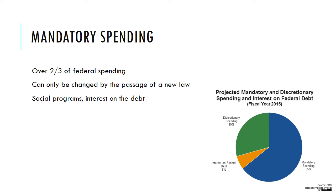Discretionary spending must be approved annually, and the biggest aspects are defense and education. Mandatory spending includes social programs — Social Security, Medicare, Medicaid. These are mandatory spending programs that once the law has been passed, the government is required by law to spend that money in the future. The only way to change that would be to pass a new law changing the old one, and that can be very difficult to do. The largest areas of mandatory spending are Social Security and Medicare.